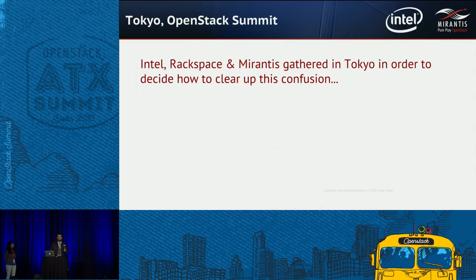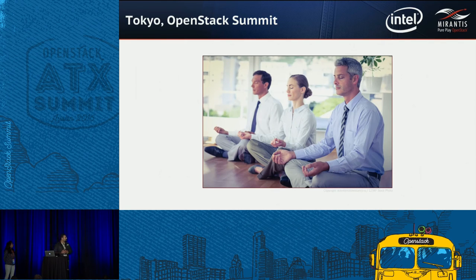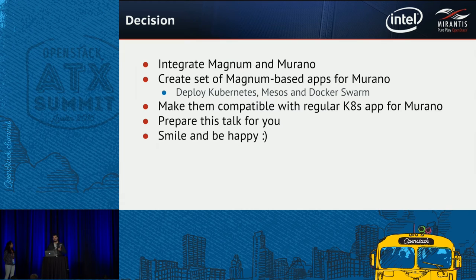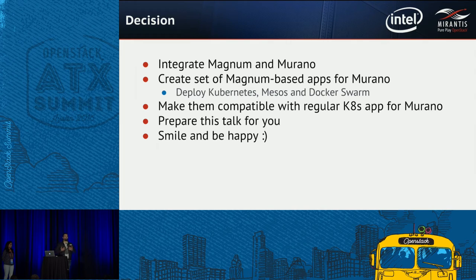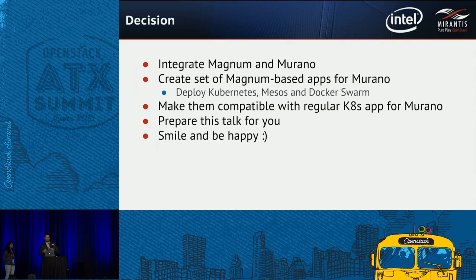So in Tokyo, Intel, Rackspace, and Murano's folks meditated a little bit and made a few decisions. First: integrate Magnum and Murano by creating a set of Murano applications based on Magnum for deployment of Kubernetes, Mesos, and Docker. Make them compatible with regular Kubernetes applications for Murano, meaning applications you created using the Kubernetes application in Murano can be compatible and easily switched to Magnum-based Murano applications for deploying Kubernetes.